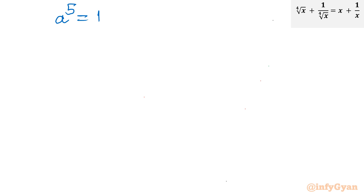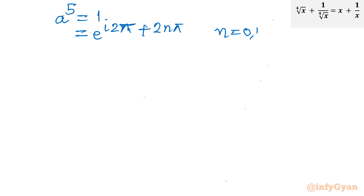Now come to the fifth root of unity. The equation was a to the power 5 equal to 1. Same approach: I write 1 as e raised to the power i·2n·pi. For the general solution I write e raised to the power i·2n·pi, where n belongs to the integers 0, 1, 2, 3, and 4 — giving five values total.